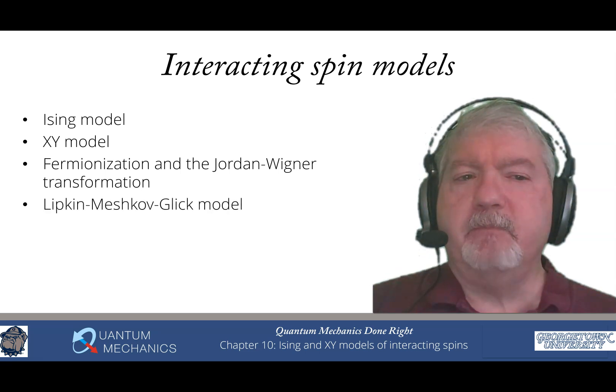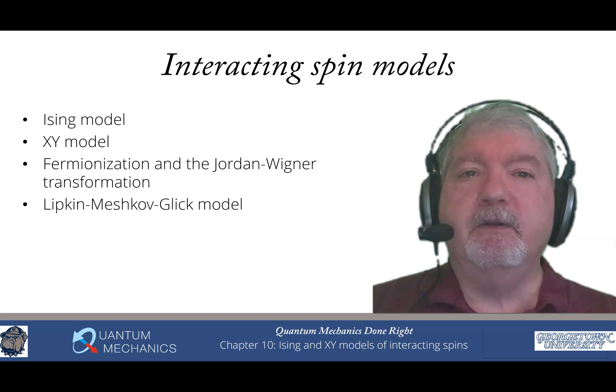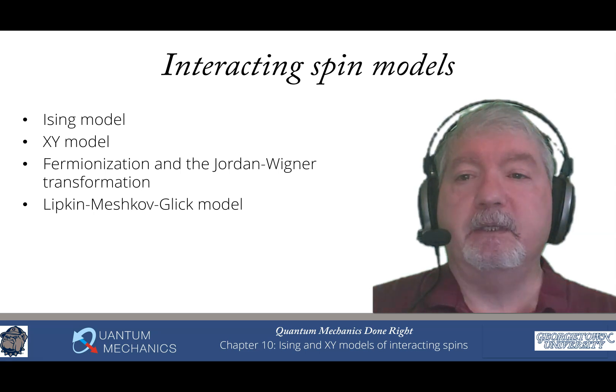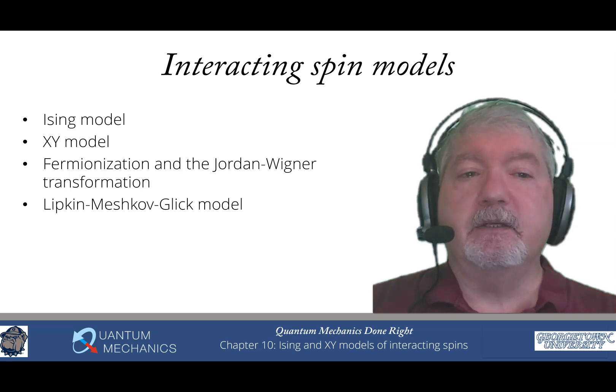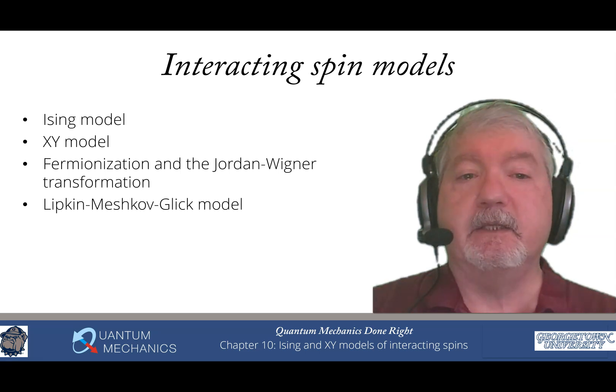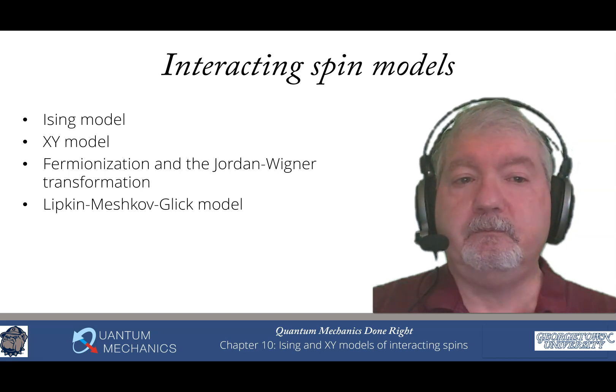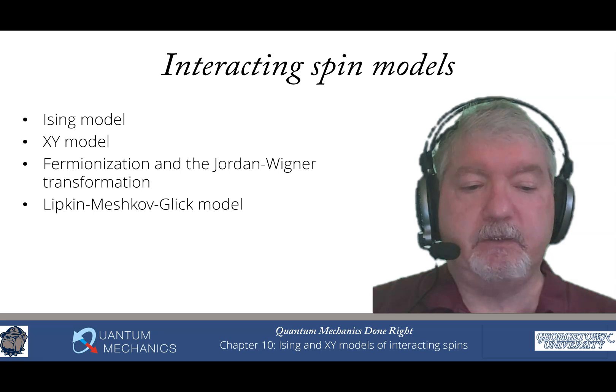We then discuss a model that many people don't know, the Lipkin-Meshkoff-Glick model. This is a wonderful model that allows us to actually get the exact solution of the quantum problem, even when we have a large number of spins, like a hundred spins, which you could never do for the Ising model or XY model that can't be solved by fermionization because the Hilbert space is too large. There's a special property: it commutes with the total angular momentum, and that allows you to characterize your states in terms of total angular momentum, reducing the Hilbert space tremendously.